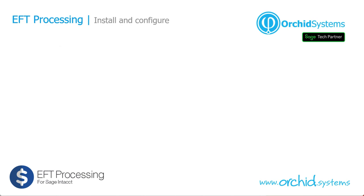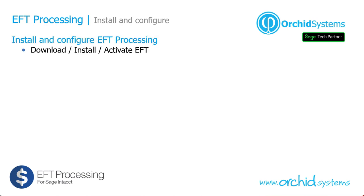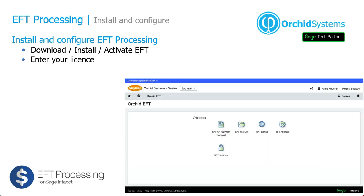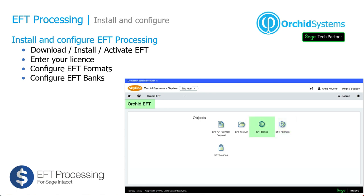Our EFT file format supports user-definable screen labels and fields to reflect the bank's terminology. First, we're going to install and configure EFT processing. Initially, you download and install the EFT XML file from the Orchid website. Then once you've installed it, you can use the EFT menu to enter your license code, to configure the EFT formats that you want to use, and to configure your formats for the banks that you are creating EFT files for.